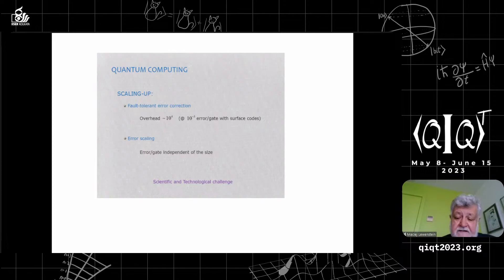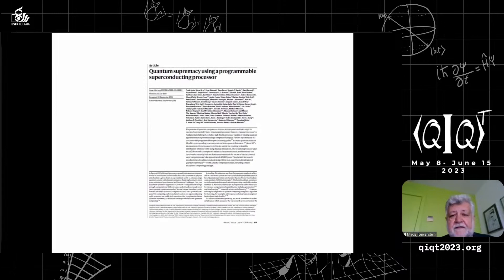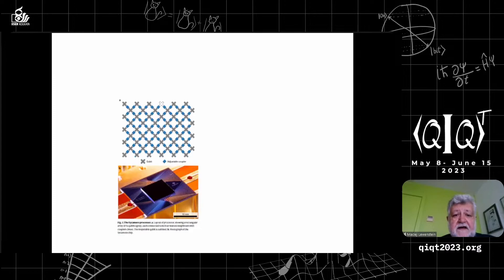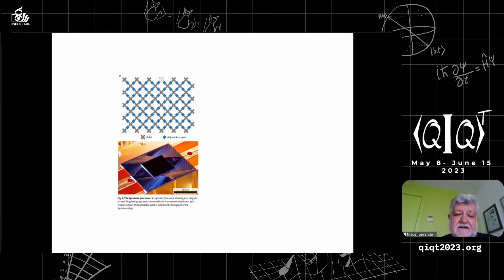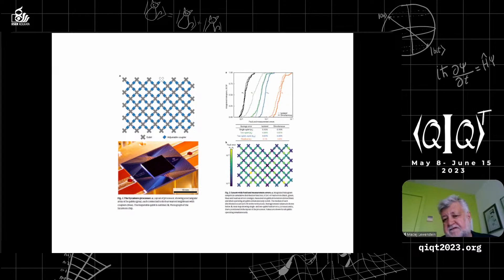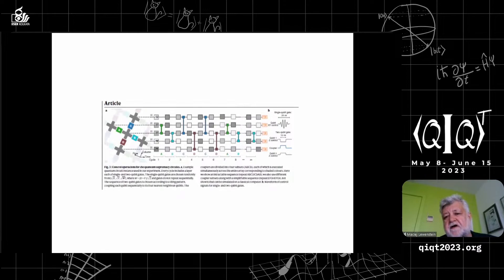This is why John Preskill proposed why don't we focus on noisy intermediate scale quantum devices which probably could have some quantum advantage. The first paper on quantum supremacy was by Google and John Martinis who built a system of superconducting qubits and applied a random circuit of gates with relatively good fidelity, then sampled from this random circuit.